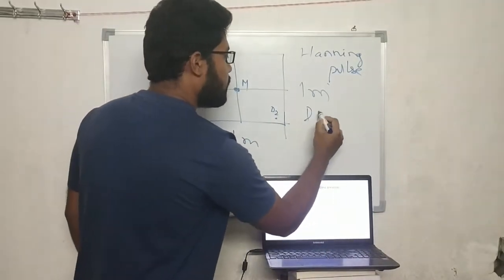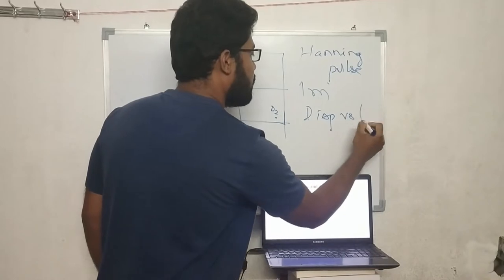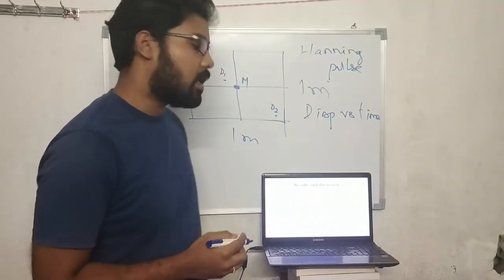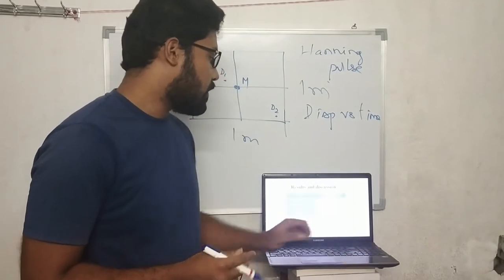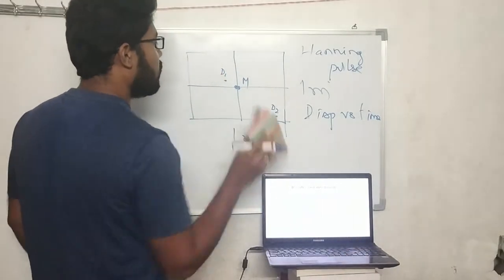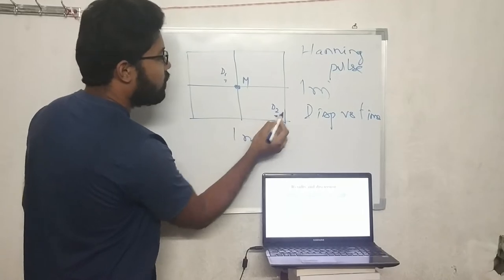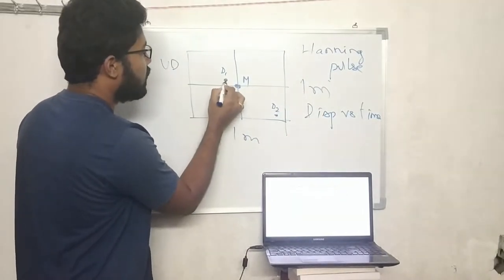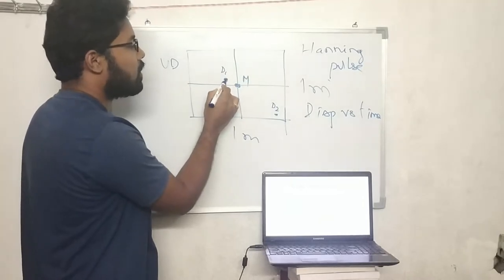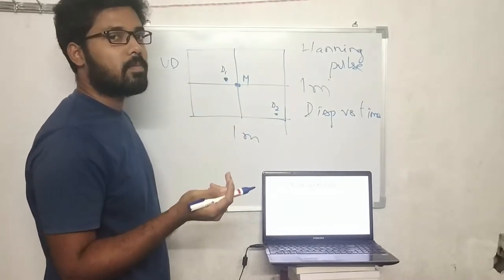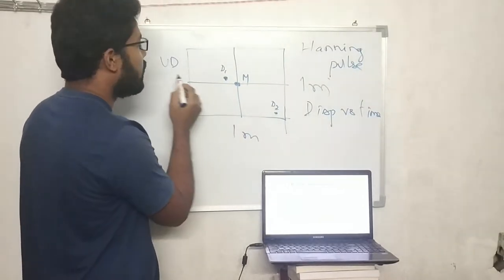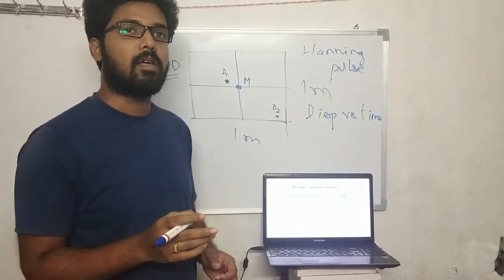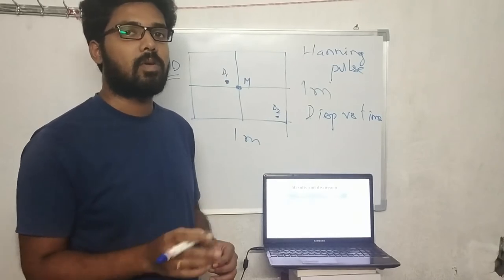For results and discussion, we found displacement versus time plots for all cases - undamaged and damaged. I have tabulated the results. We found that at D1 and D2, for the undamaged case, the displacement is different than the damaged plate. Because there is a difference in displacement, we can say there is some damage detected. That's why there was a difference in the displacement.